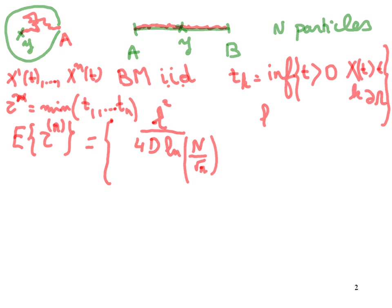L is actually the length of the shortest ray from position y. If b is located closest to y, then L is the distance to b. Otherwise, in dimension one, L is the minimum of |y − b| and |y − a|. So this is when |y − a| is further away than |y − b|.